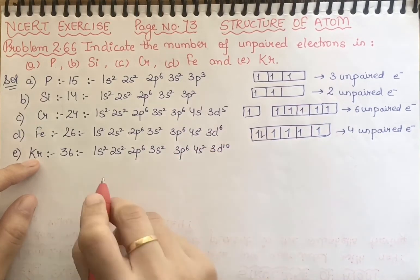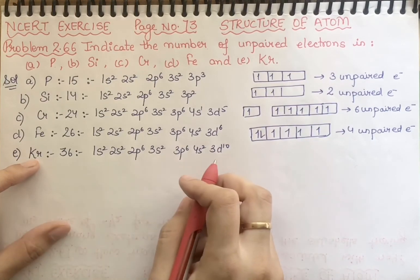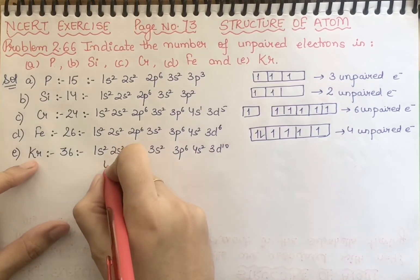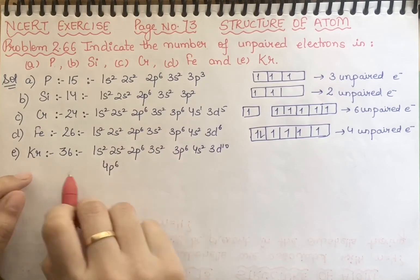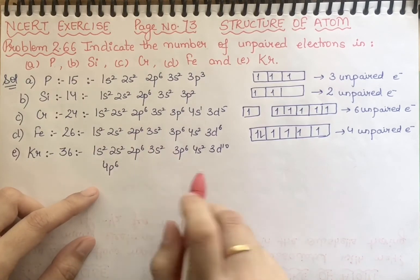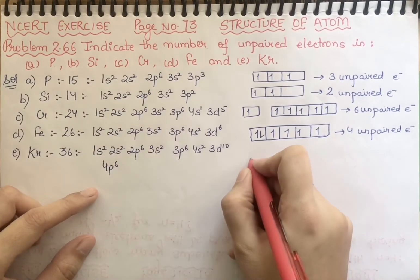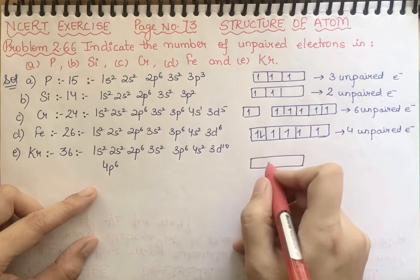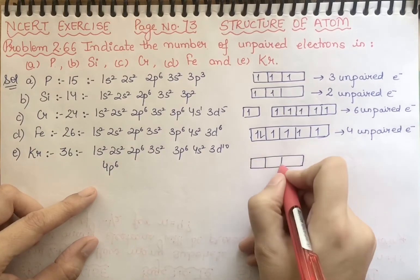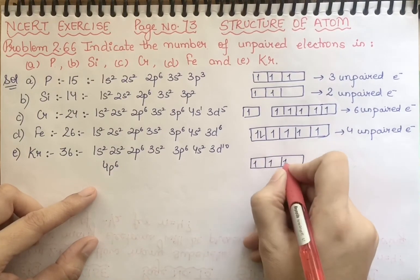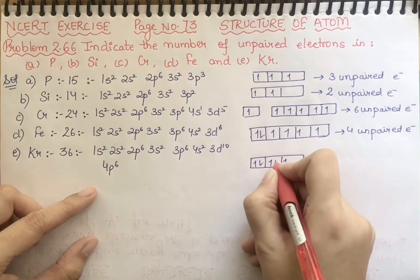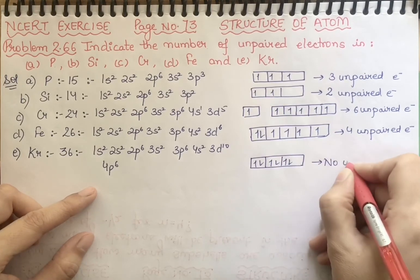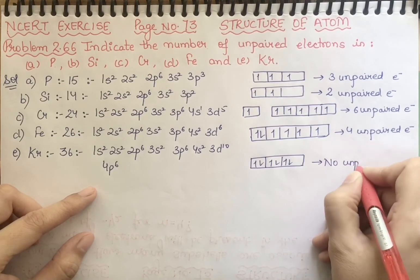After that, we have krypton. We fill 4p6 completely. The electrons fill completely the last orbital drawn, so 1, 2, 3, 4, 5, 6. So I can say there are no unpaired electrons in krypton.